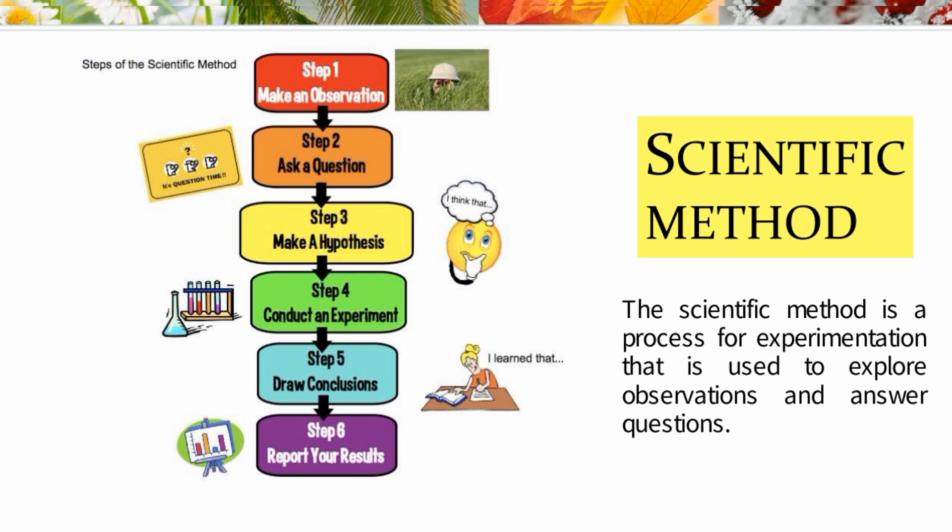Step four: conduct an experiment. They conduct experiments in labs and observe the hypothesis. Step five: draw conclusions. The experiment gives results, and they check these conclusions. Step six: report your results.